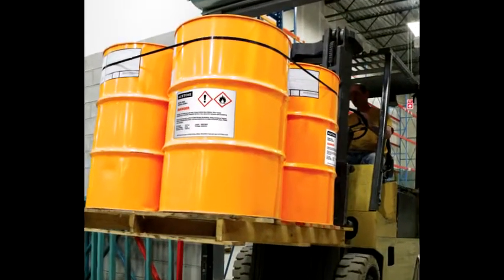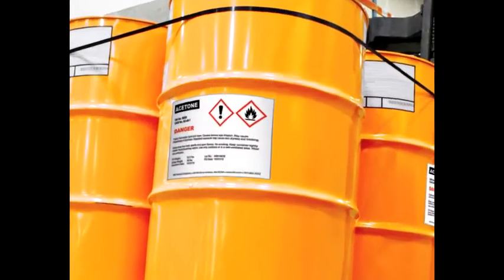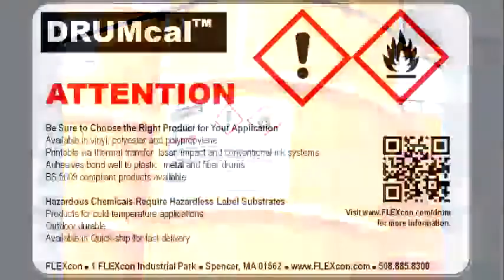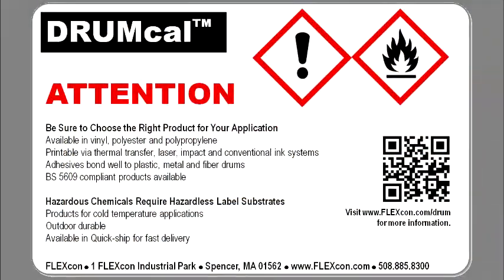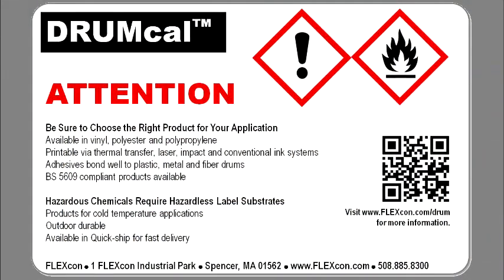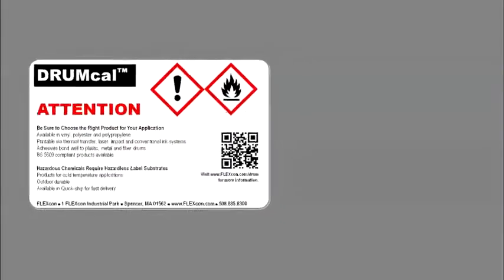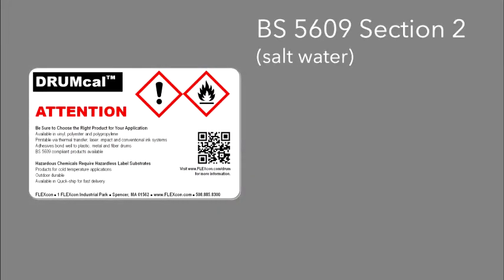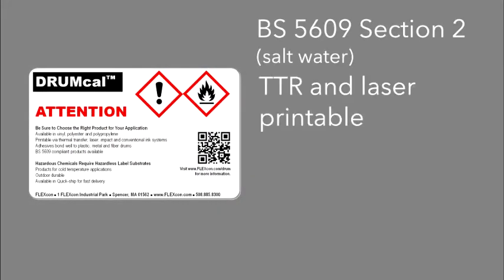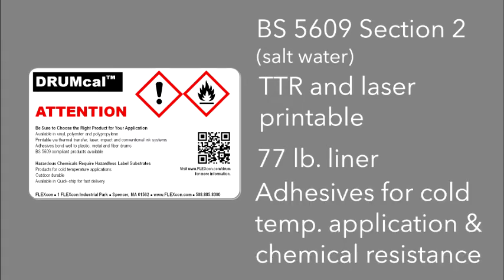FlexCon has multiple options for GHS-compliant drum labeling for you to choose from. Many are BS5609 Section 2 certified for saltwater immersion, which is necessary for trans-oceanic transport. Vinyls and polyesters are available with top coat options for laser or thermal transfer printing and adhesive options for cold temperature applications and varying levels of chemical resistance.